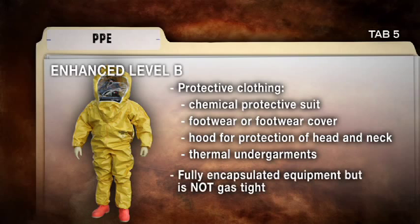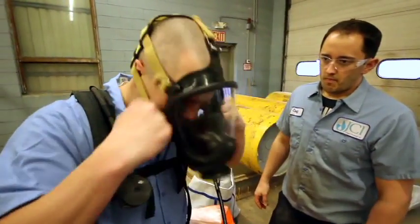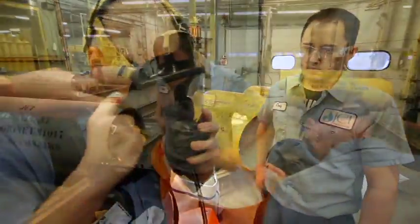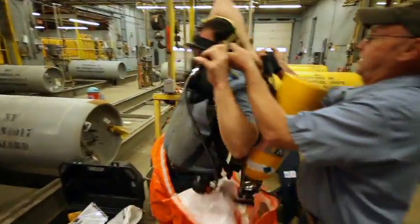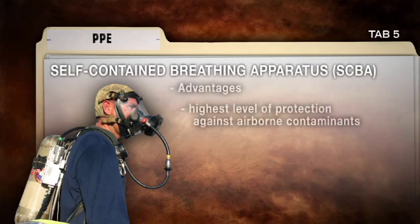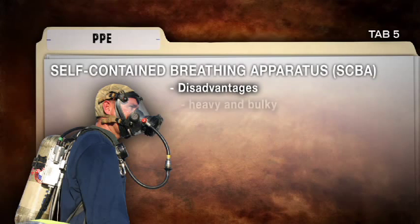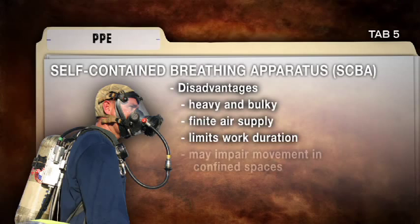Enhanced Level B protection provides fully encapsulated protection, but is not gas-tight. The Self-Contained Breathing Apparatus, or SCBA, is an important component to effective PPE. There are distinct advantages and disadvantages to using SCBA. It provides the highest available level of protection against airborne contaminants and the highest level of protection under strenuous work conditions. However, SCBA is also heavy and bulky, has a finite air supply which limits work duration, and may impair movement in confined spaces.